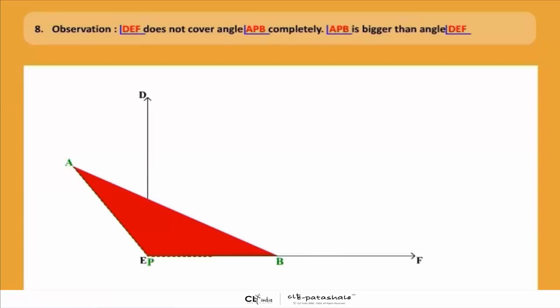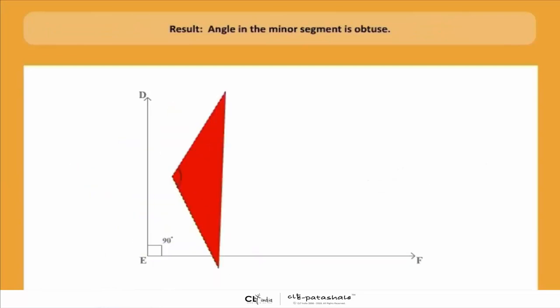So what can we conclude? So what did we observe children? That angle APB is greater than 90 degrees, and all of us know that if an angle is greater than 90 degrees, what do we call it? We call it an obtuse angle. So we can conclude that angle in the minor segment is obtuse.